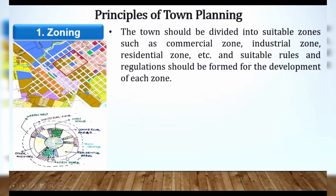Agar koi residential area hai aur ek industrial area hai, toh dono ke liye same rules toh nahi ho sakte. But whenever you are planning a town, you should form separate rules — agar industrial area hai toh uske liye separate rules, agar commercial area hai toh uske liye separate rules, aur agar residential hai toh separate. Whatever is the zone, you should form separate rules and regulations. First divide that particular area into various zones.